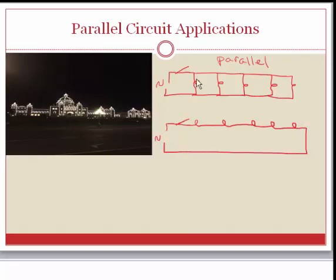The advantage of the parallel circuit is that if we lose one of the light bulbs — say we lose this first light bulb — it doesn't matter because current can still flow through the second, third, and fourth light bulb. If we did the same thing with the series circuit, you can see that our path is broken, and now we're not able to have current flow.